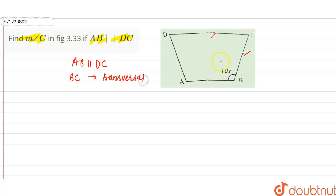So angle B and angle C are the angles on the same side of the transversal. So we can say that angle B and angle C are co-interior angles.